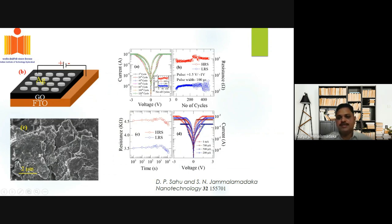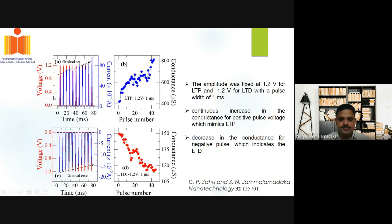We also tried to show multi-level resistance switching using this graphene oxide based resistive random access memory device. We also tried to show long-term potentiation and long-term depression by applying continuous pulses of 1.2 volts for long-term potentiation and negative 1.2 volts for long-term depression. You can see a continuous increase in conductance for the positive pulse voltage, mimicking long-term potentiation, and a decrease in conductance for the negative pulse, indicating long-term depression.